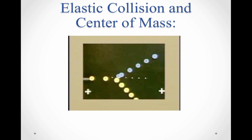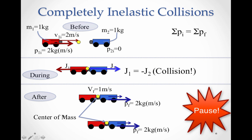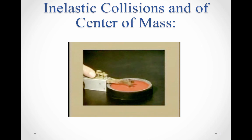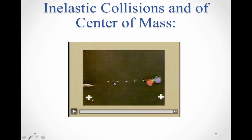We have one more example for completely inelastic collisions showing conservation of momentum. The center of mass between our two equal-massed objects is right there. After they interact via Newton's third law and receive an equal impulse, they stick together and keep cruising. Conservation of momentum is evidenced by the center of mass continuing to move with a constant velocity. Even in an inelastic collision, the center of mass moves in a straight line — the pucks hit, stuck, and actually rotated, yet the center of mass kept cruising as if nothing ever happened.